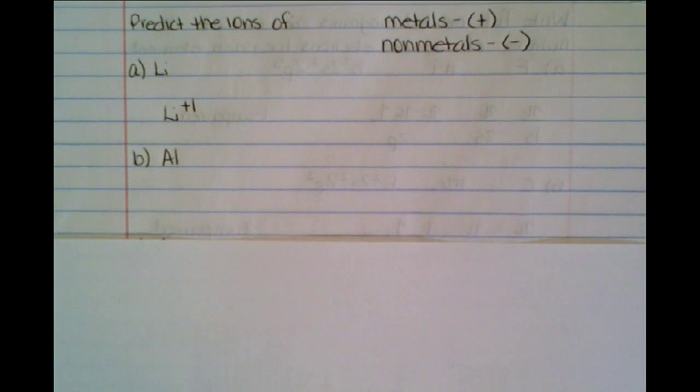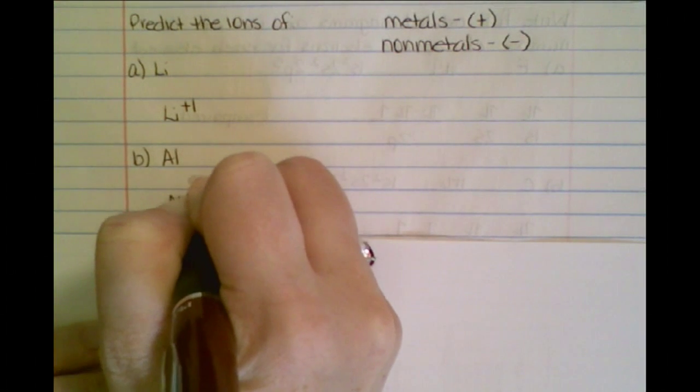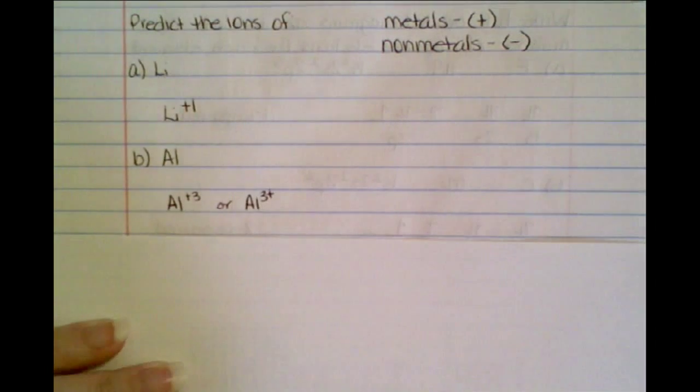So if we look at aluminum, you find aluminum on the periodic table, it is a metal. So we're going to go to the left. How many places? We're going to go to the left, three places. So this would become Al plus three or Al three plus, depending on what your instructor wants you to do.